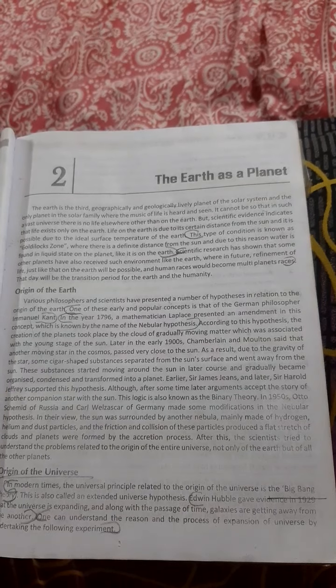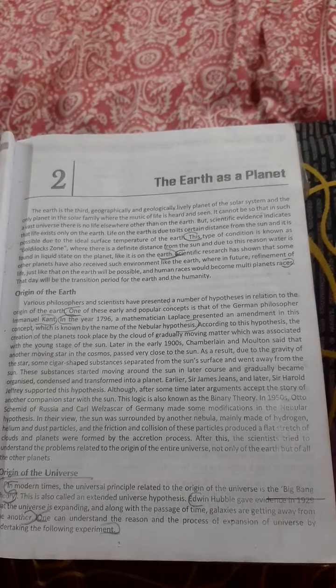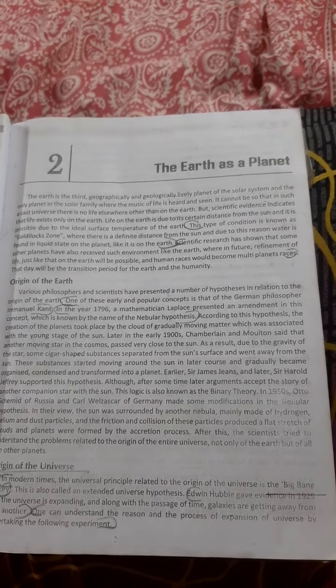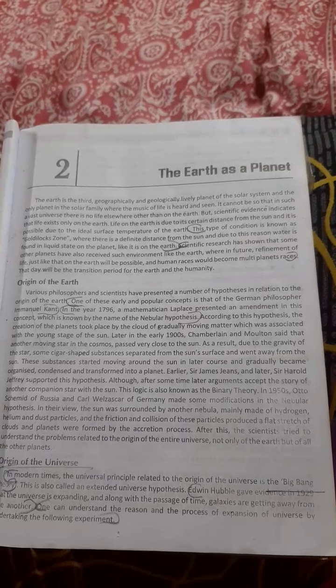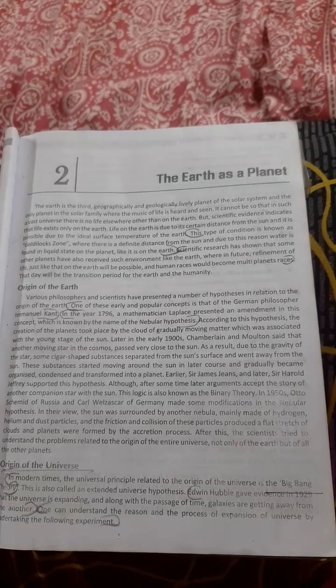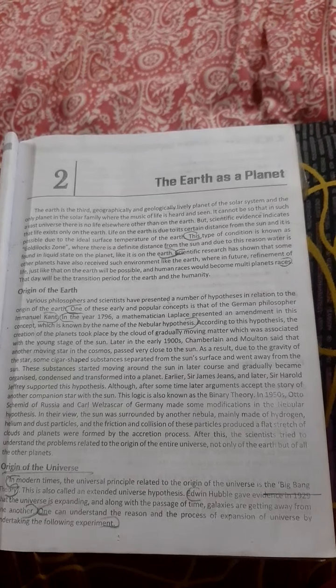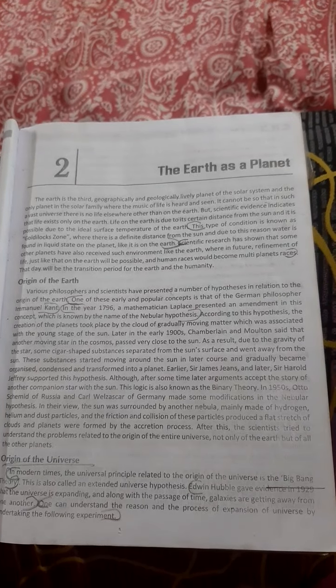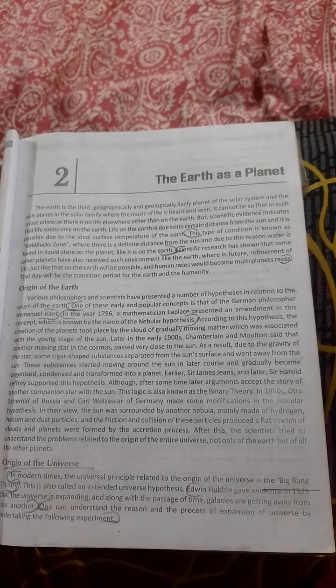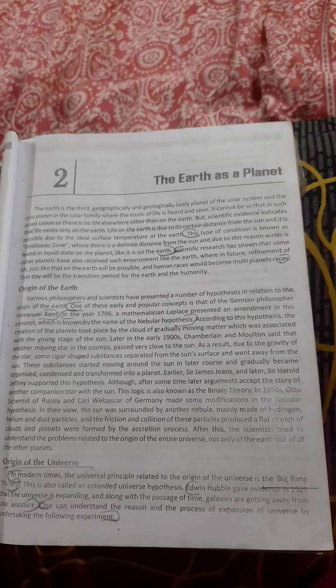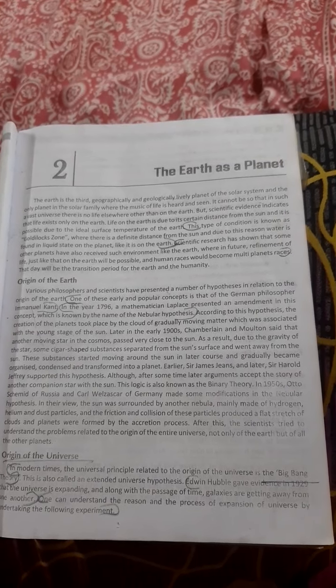Scientific research has shown that some other planets have also received such environments like Earth, where in future refinement of life just like that on Earth will be possible, and human races would become multi-planet races. That day will be the transit period of the life, Earth, and humanity.